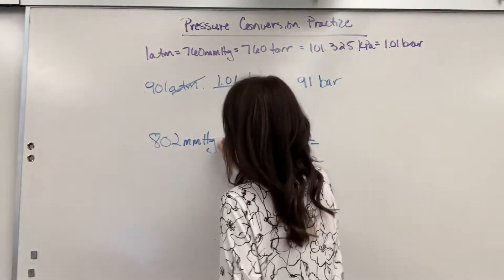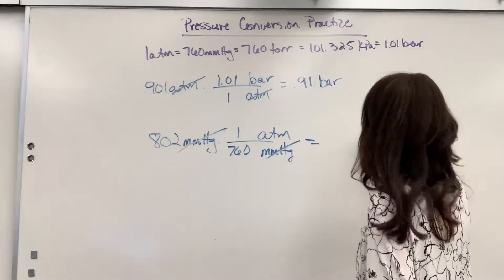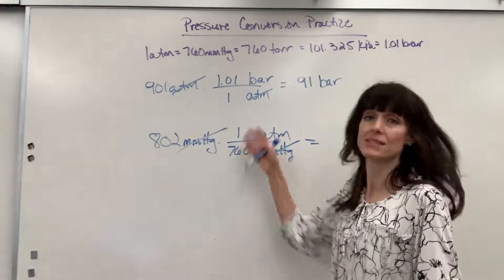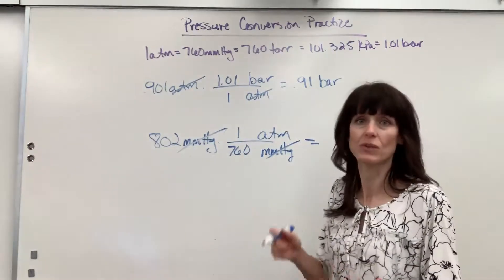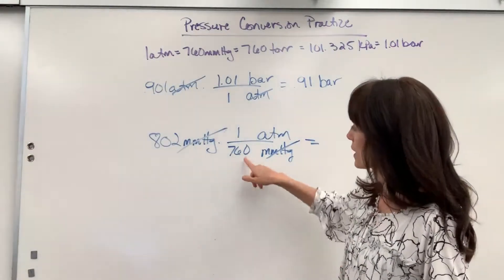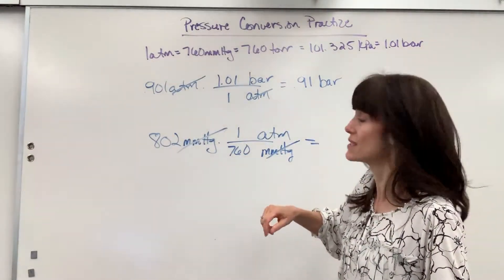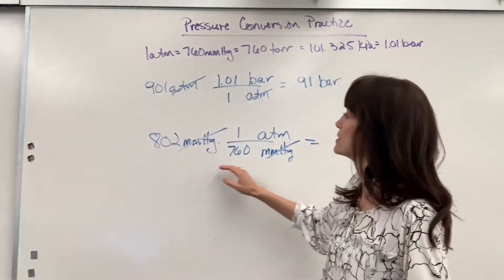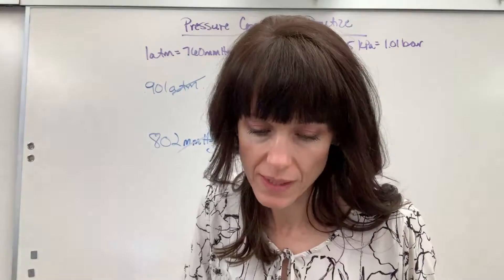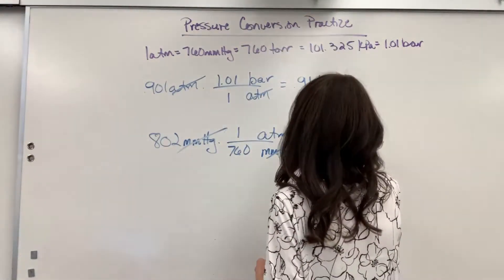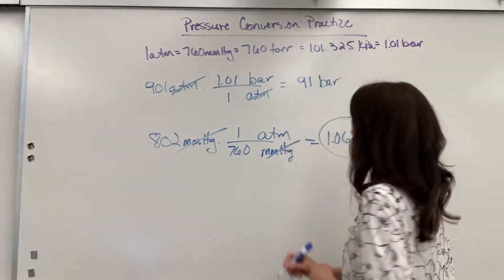So now millimeters of mercury cancels. I'll be left with ATM. And what does this tell me to do? Remember, I try and think as little as possible. The units tell me when to multiply and divide. Because this is in the denominator, that 760, I'm ready to do 802 divided by 760. And the answer on this is 1.06, 1.06 ATM.